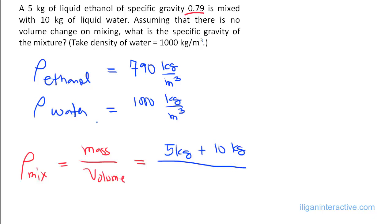And total volume, well, knowing density is mass over volume, we can solve for the volume of each component. So volume is just mass over density. So in this case, for example, for the ethanol, the volume of the ethanol will just be mass of ethanol divided by ρ of ethanol. So in this case, 5 over 790, right?